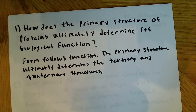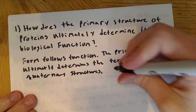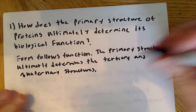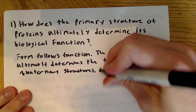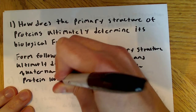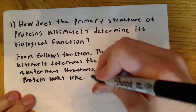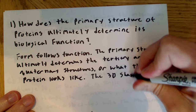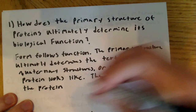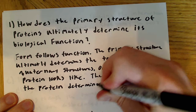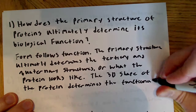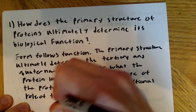The primary structure ultimately determines the tertiary and quaternary structures, and what this means in layman's terms is it ultimately determines its three-dimensional shape, or what the protein looks like. And the 3D shape of the protein determines the function.